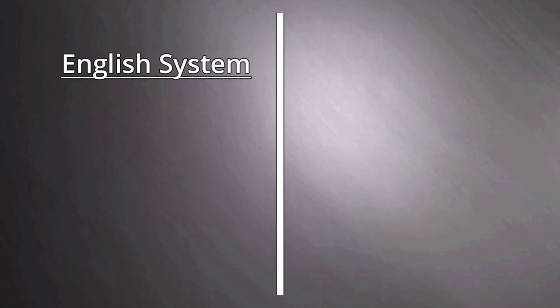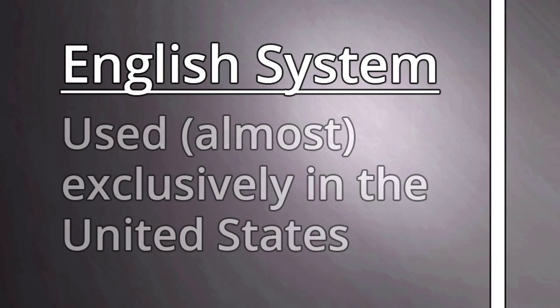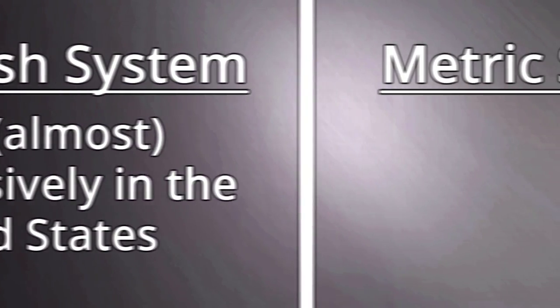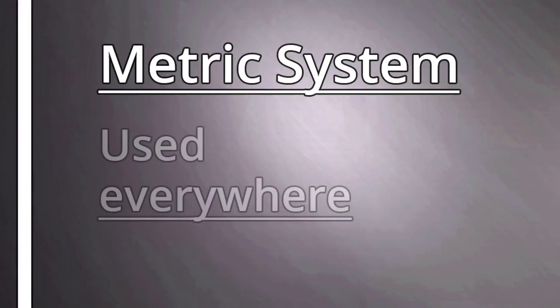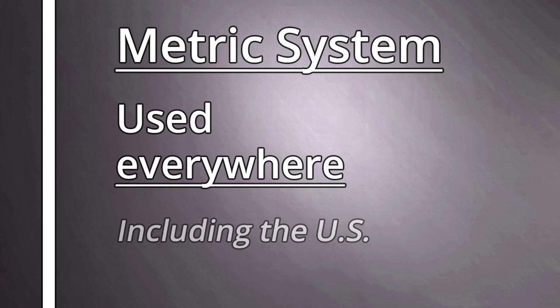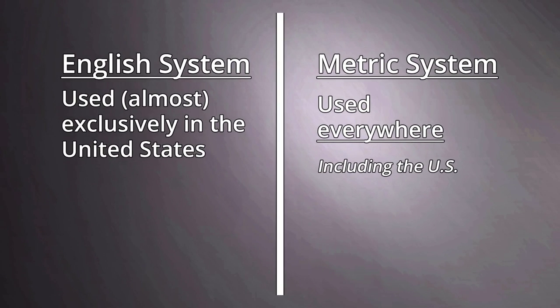There are two common measurement systems used in the world: English and metric. The English scale is used almost exclusively in the United States, while most of the rest of the world uses metric. Engineers and machinists must be able to use both, as both are used in the United States. Each system has its own base set of units.